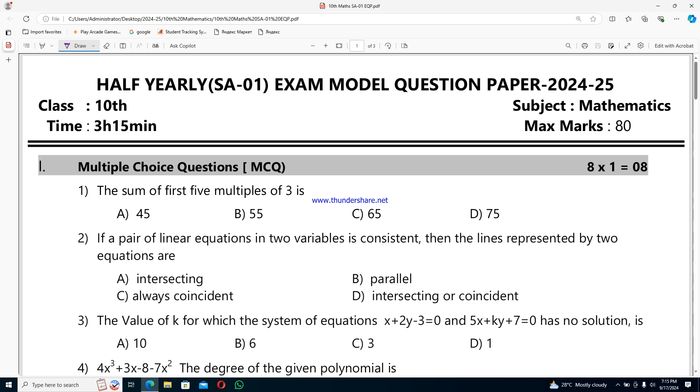First we have multiple choice questions MCQs, each one mark and total here we have 8 questions for 8 marks. First question: the sum of first 5 multiples of 3 is option A 45,